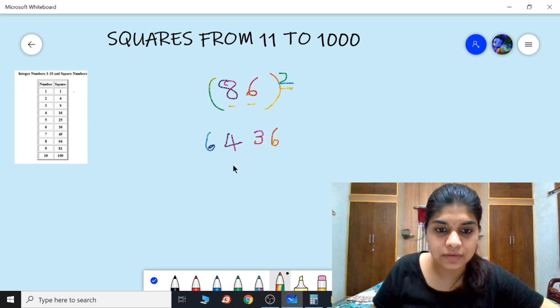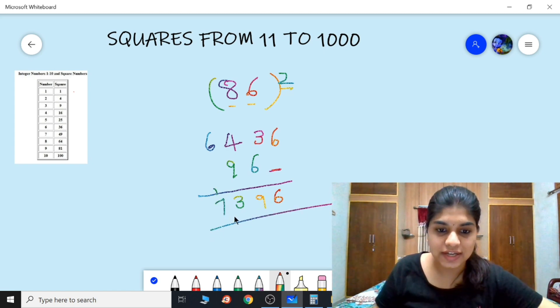Now what we need to do is multiply 8, 6, and 2. 12 and 12 is 96. We're leaving one place here in the right and writing this, so it's 6, 9, 13, 7. 7396 is the answer. Let's check.